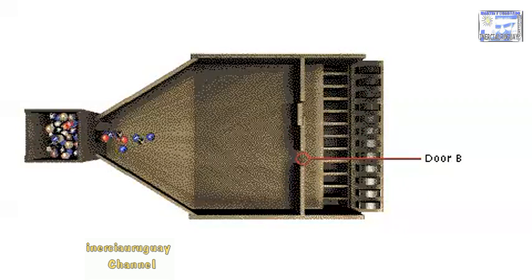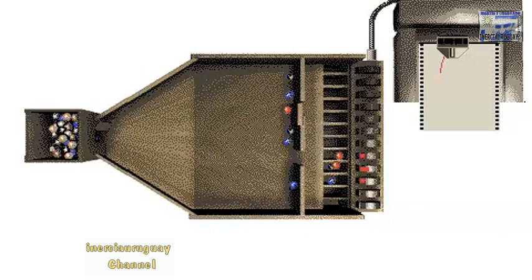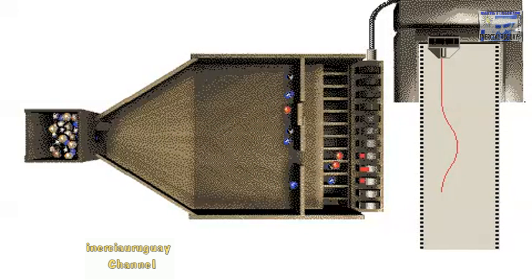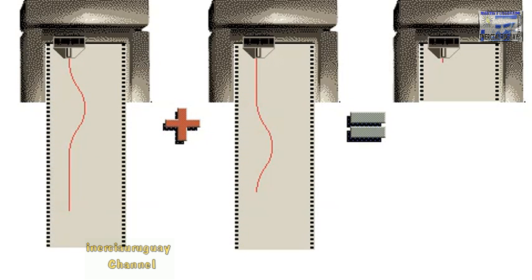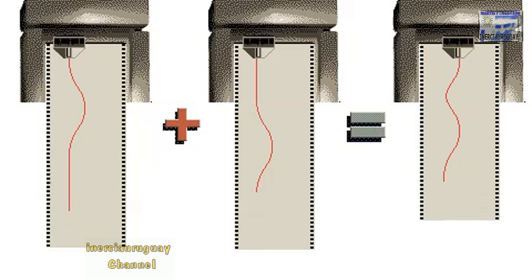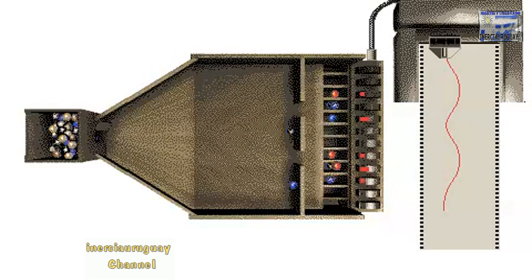A similar graph is produced when the marbles roll through door B. If both doors are open, we might expect the graph to look like the sum of the two previous graphs. Let's do the experiment. The results match our prediction.